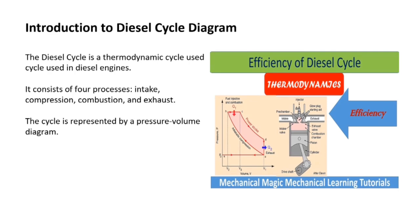Now let's see the diesel cycle diagram. The diesel cycle is a thermodynamic cycle used in diesel engines. It consists of four processes — intake, compression, combustion, and exhaust — and is represented by a pressure-volume diagram.